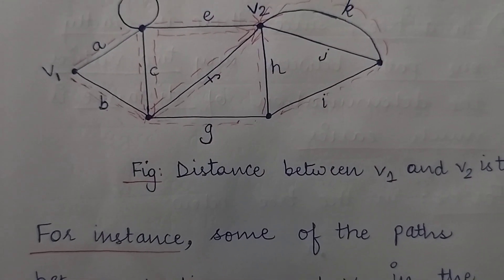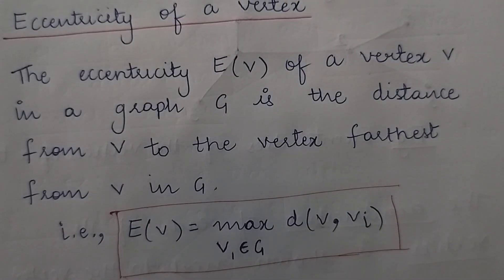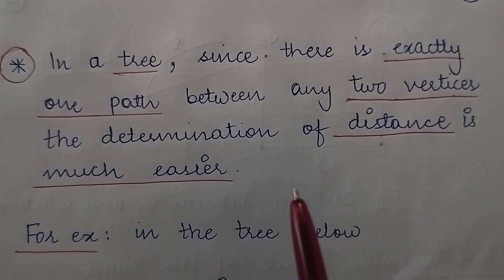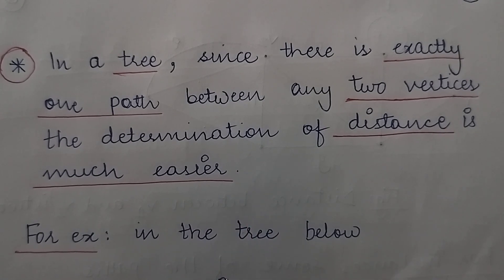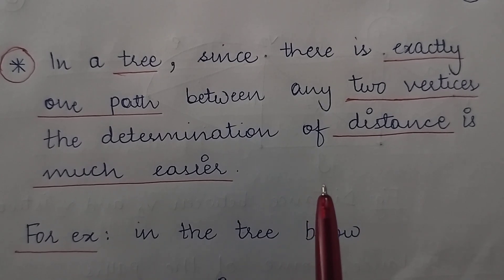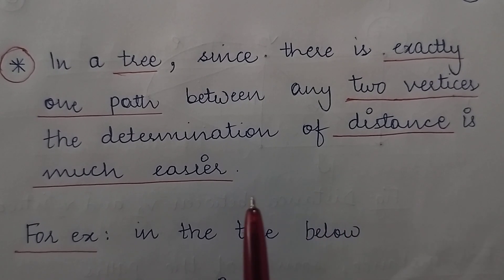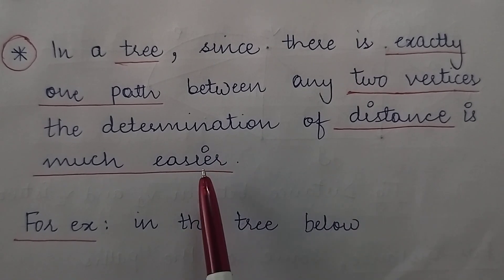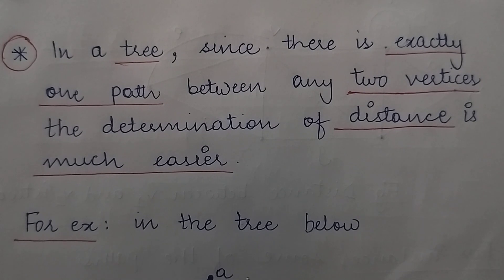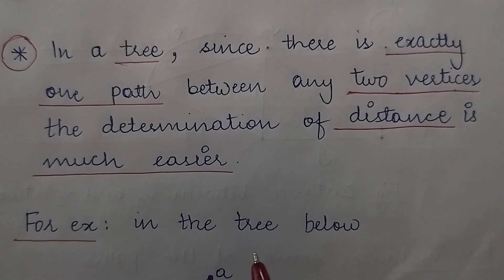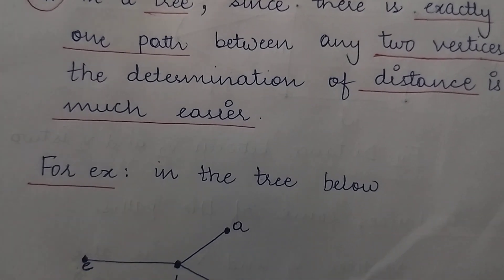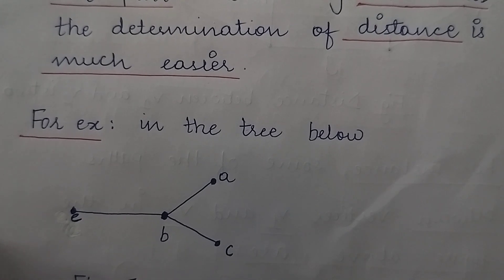This is how you can find out the distance between any two vertices either in a graph or in a tree. In case of a tree, there is exactly one path between any two vertices, because the condition of a tree is that there must not exist more than one path between any two pair of vertices. So in the case of a tree, the determination of distance is much easier because the task of finding out all the available paths is ruled out in the first step itself.